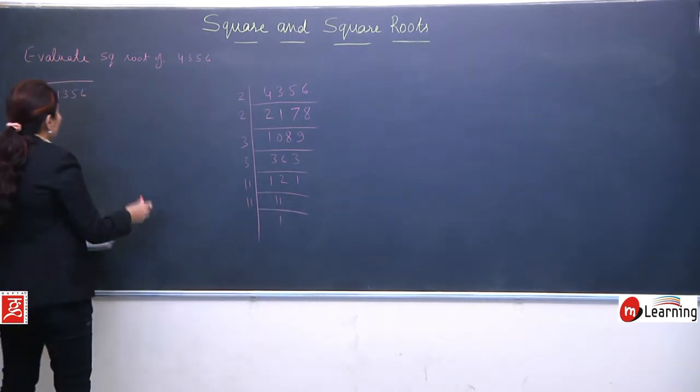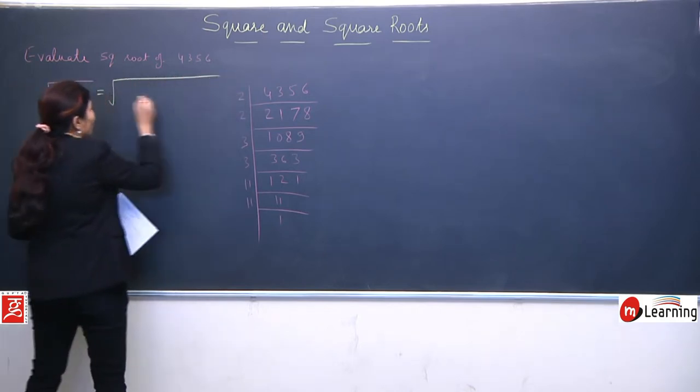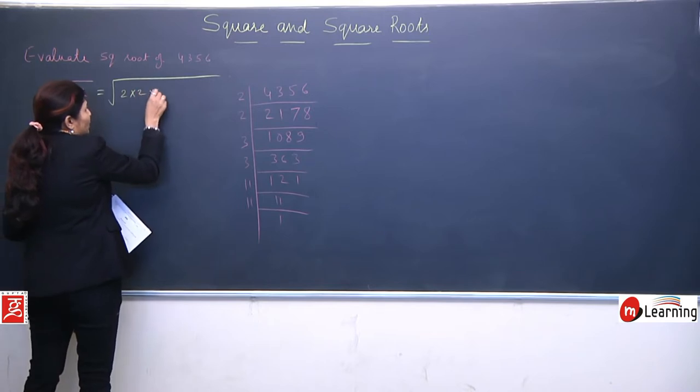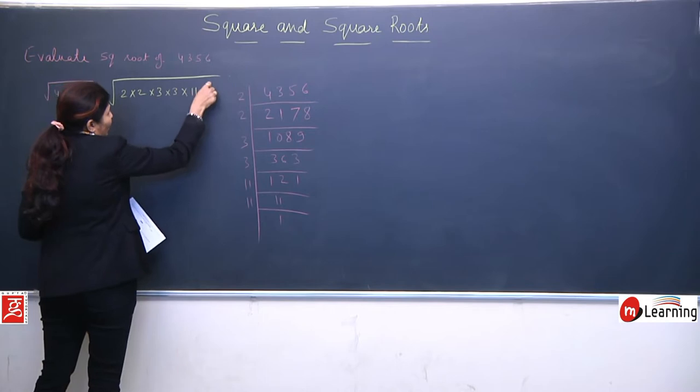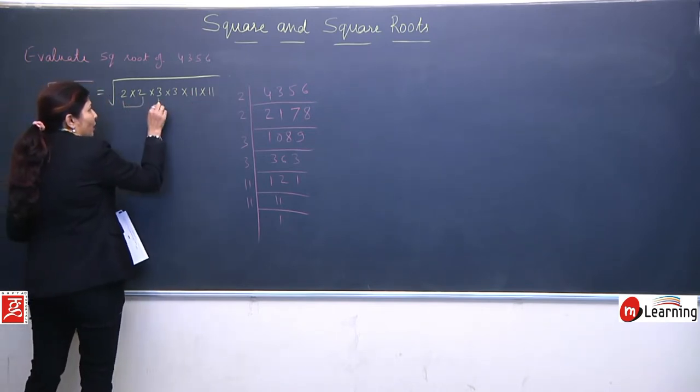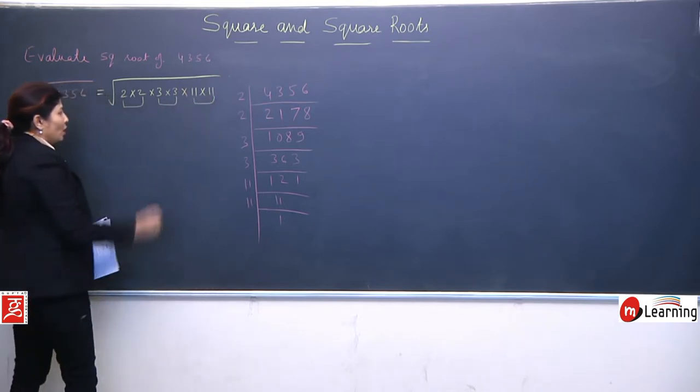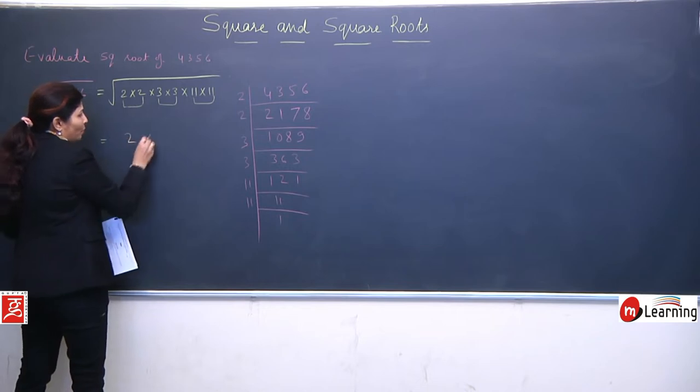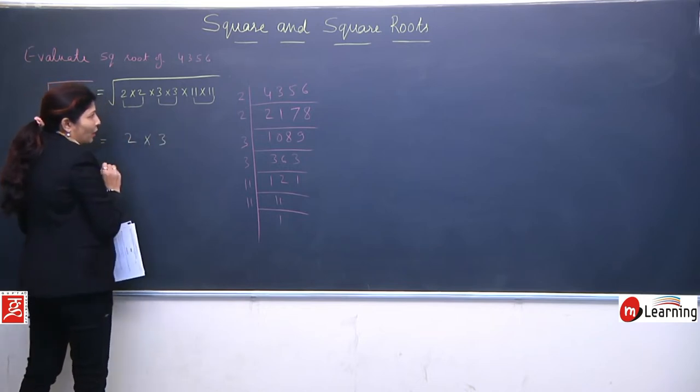So it means our factors will be 2 into 2, multiply by 3 into 3, multiply by 11 into 11. Using the shortcut method, make pairs from these. Make this pair, make this pair, make this pair. Square root will be removed. Take one from these two, take one from these two, and take one from these.